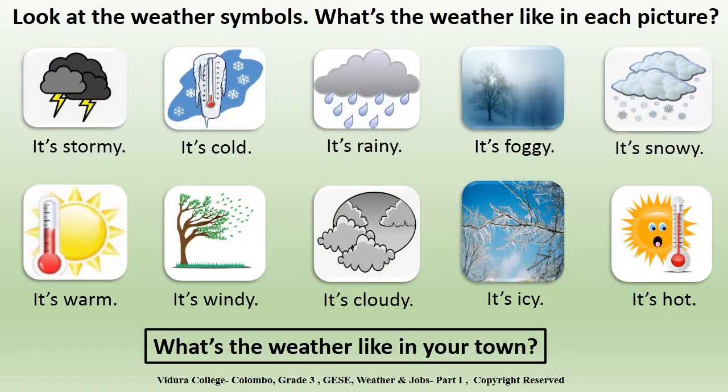Look at the weather symbols. What's the weather like in each picture? First one, it's stormy. When there are strong winds, rain, thunder or lightning, we call it stormy.